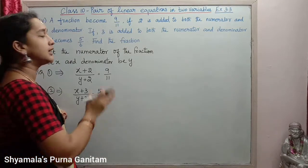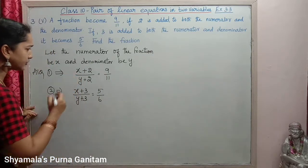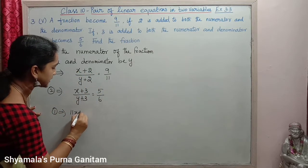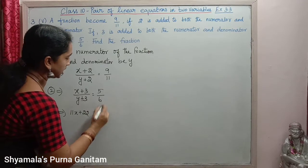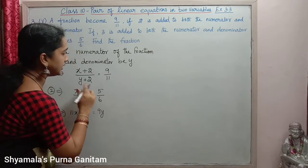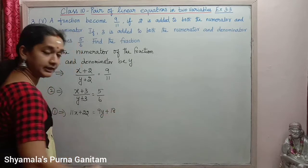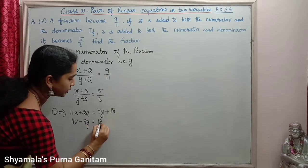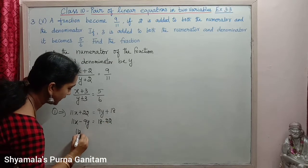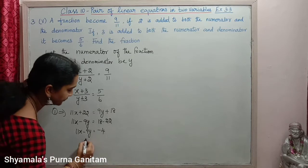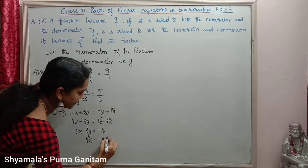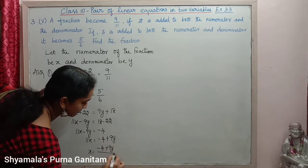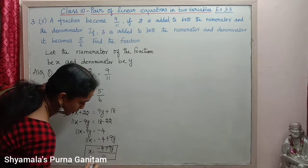Use the substitution method to find the values of x and y. Simplifying the first equation by cross multiplication: 11(x + 2) = 9(y + 2), giving 11x + 22 = 9y + 18. So 11x minus 9y equals 18 minus 22, which gives 11x minus 9y equals minus 4. Therefore x equals (minus 4 plus 9y) divided by 11. This is the value of x in terms of y.